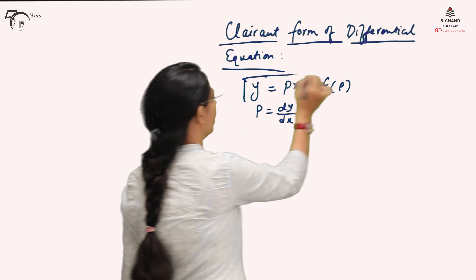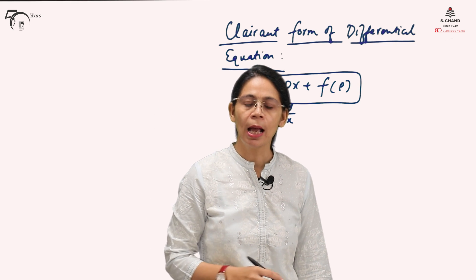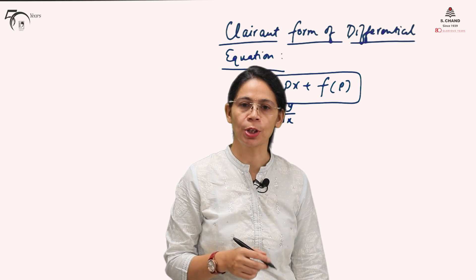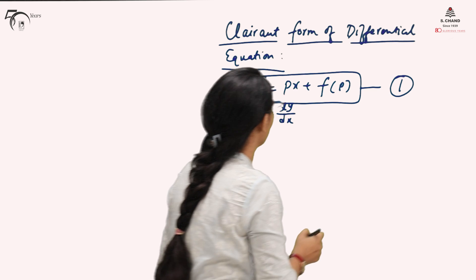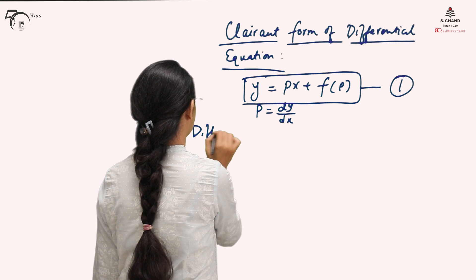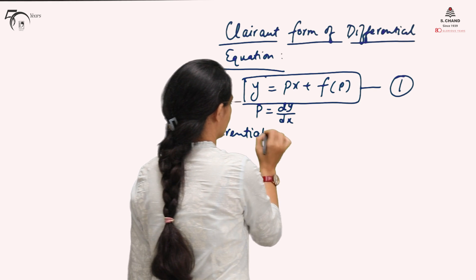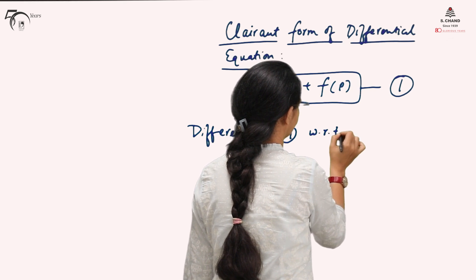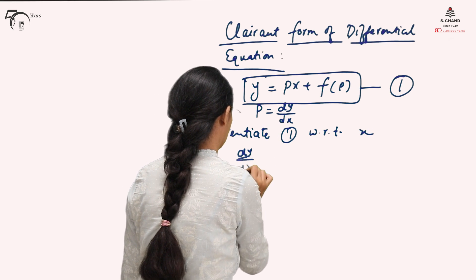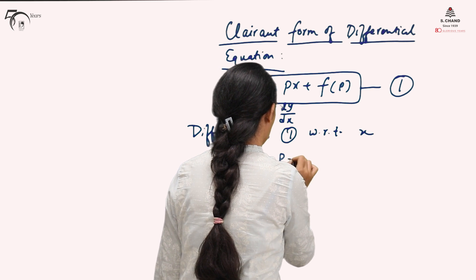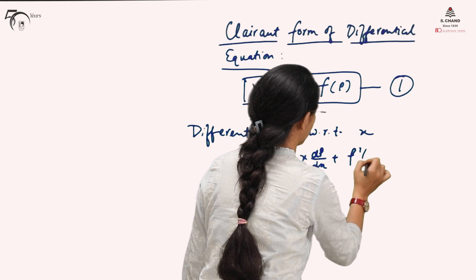Claret's says that if the given differential equation is in this form, it will be called the Claret's form of differential equation and its solution can be found. Let us call this equation number one. We differentiate equation one with respect to x, and we get dy/dx equals p plus x·dp/dx plus f'(p)·dp/dx.